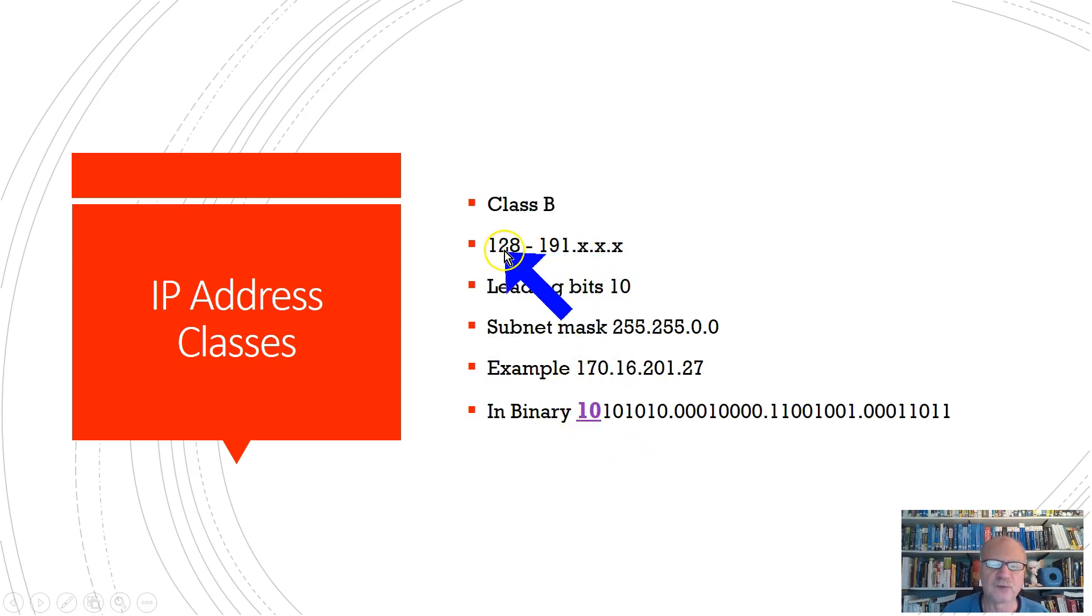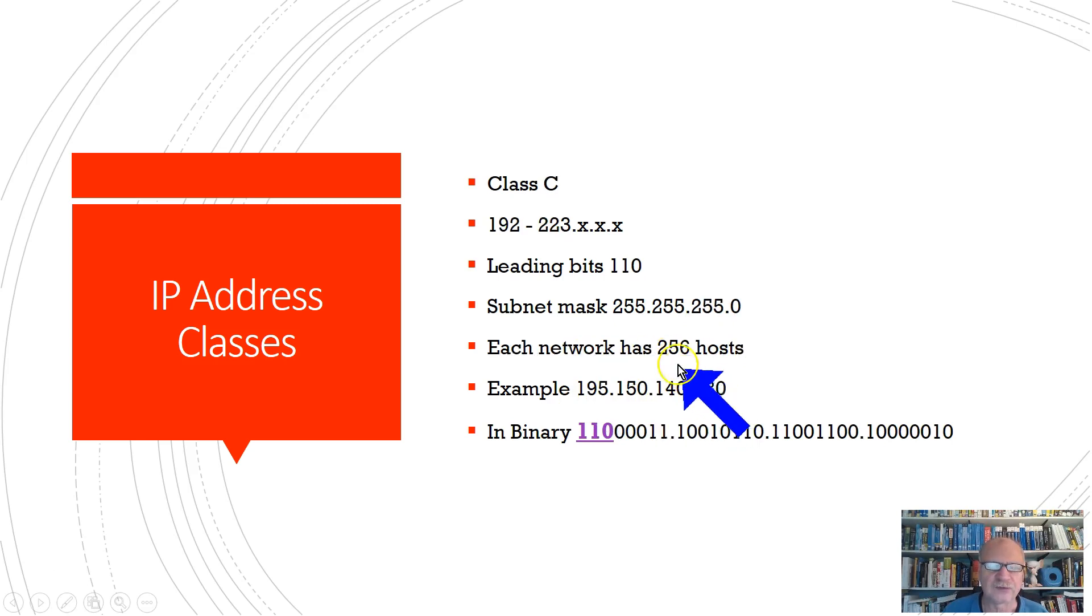And it would always begin with a one, zero. So here's an example, 170. You notice 170 is somewhere inside of this range. 16, now remember 16 here is part of the network ID, because I have 255.255.0.0. So 170.16 is the network ID here. And then my host ID in this example is 201.27.